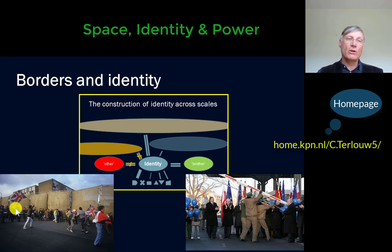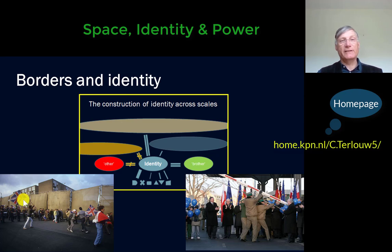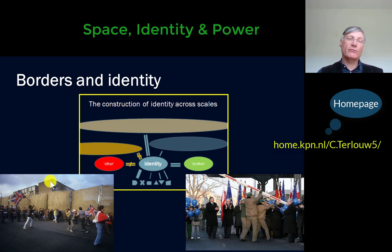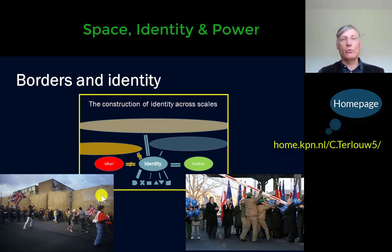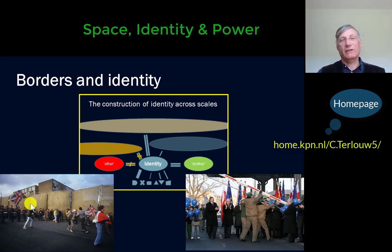For instance, here we see in Northern Ireland an Orange March of Ulster Unionists who really show their British identity, but they show their identity towards mostly a Catholic area. This is a housing estate where many Catholics live, and in order to protect their identity and their feelings of identity, they erected this temporary border so that they don't see those marches as much.